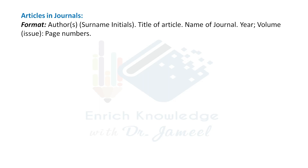Let us begin with the first example. If you refer to material or text from a journal, here is how you cite it and write the reference. For articles in a journal, the format is: Author surname followed by initial, full stop. Title of the article, full stop. Name of the journal, full stop. Year; volume(issue): page number. This is the standard format when referring to journal articles.